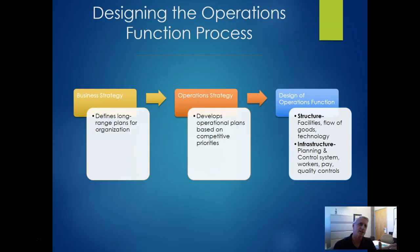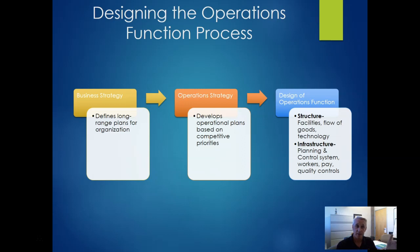It goes in a sequence. We have our business strategy — what we're really trying to accomplish as a business, and this also applies to nonprofits. These are our long-range plans. We then bring it back to develop our operations strategy of how we do the day-to-day to build and support that business strategy. These become our operational plans, based on something called competitive priorities. That in turn allows us to design our operational functions — the real nuts and bolts of what our company does.